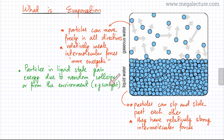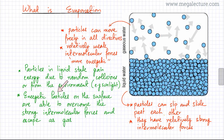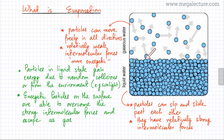There might be sunlight present or some external source of energy, so particles can gain energy from the environment and become very, very energetic. When they become energetic, these energetic particles on the surface are able to overcome the strong intermolecular forces and escape as gas. The surface particles in liquid state that have enough energy to overcome the intermolecular forces can break away from the liquid and change into gaseous state, moving freely.